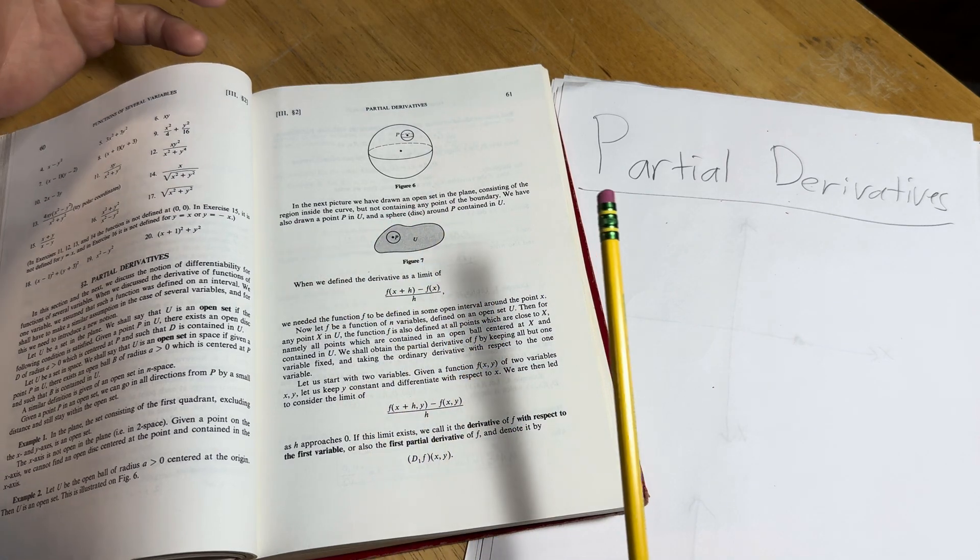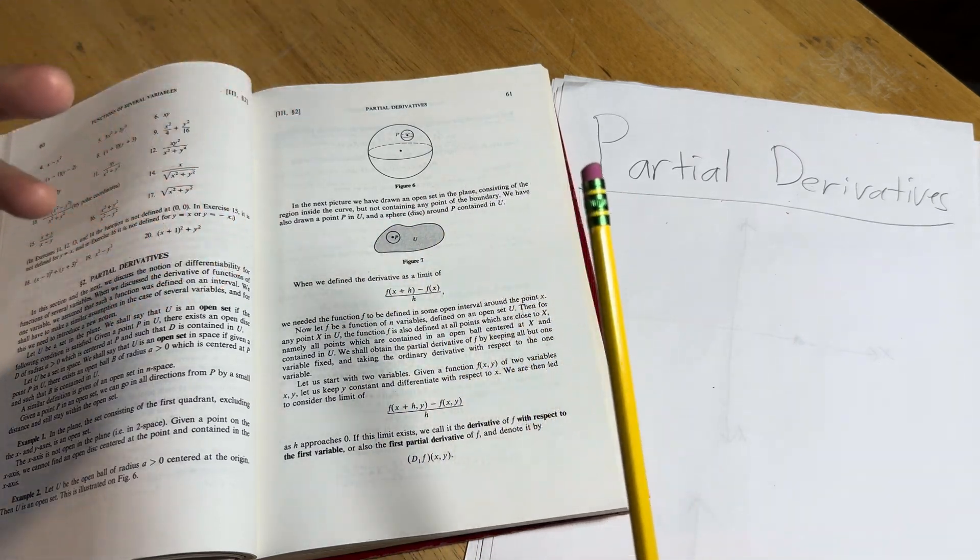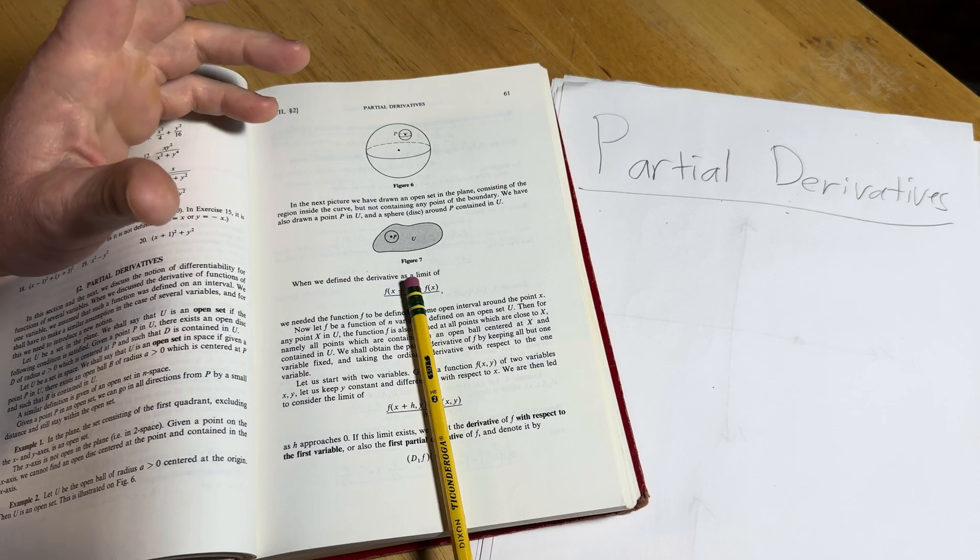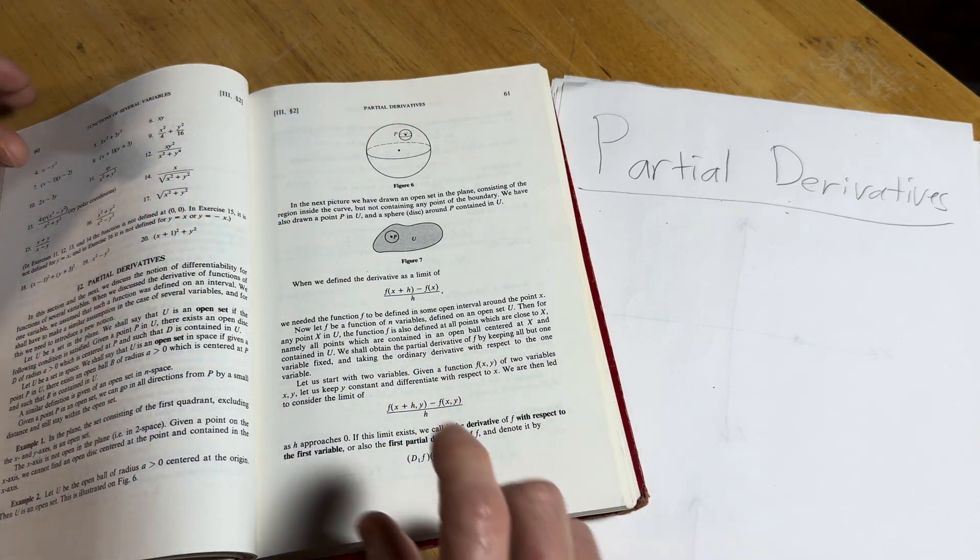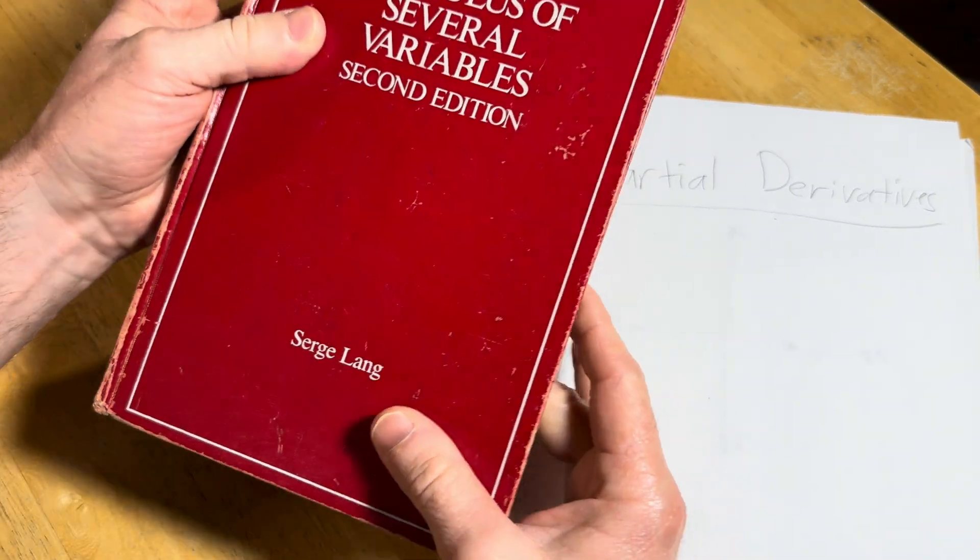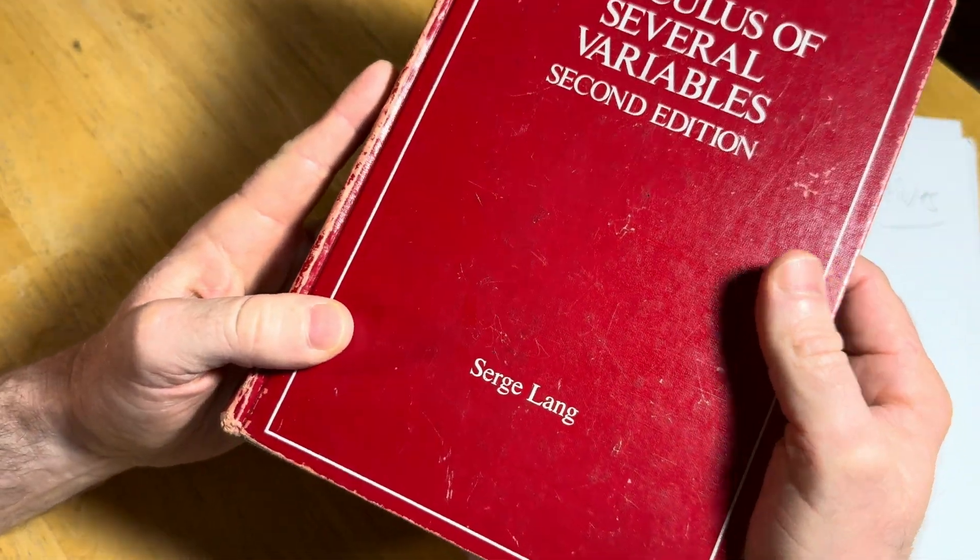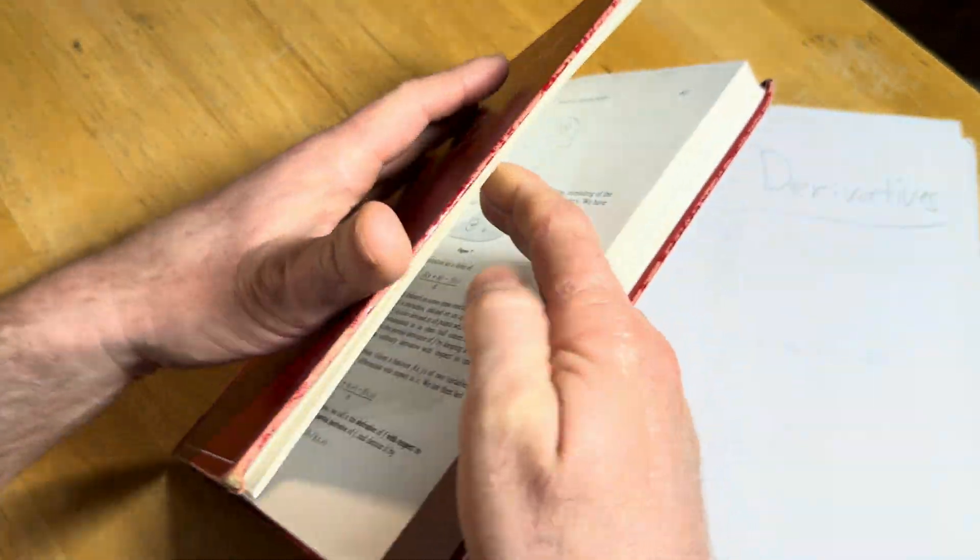Hi everyone. In this video we are going to discuss partial derivatives. So we're going to be using a book to help us do that. This book is wonderful. It is called Calculus of Several Variables and it was written by the famous Serge Lang.